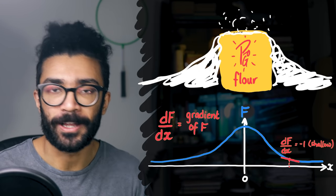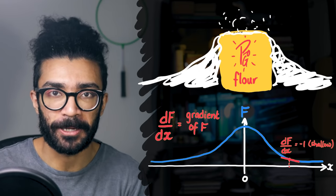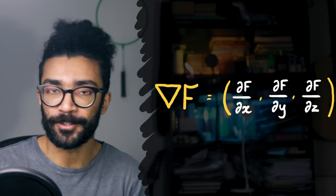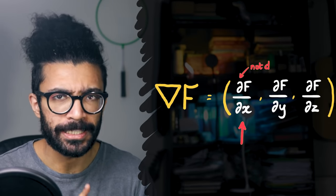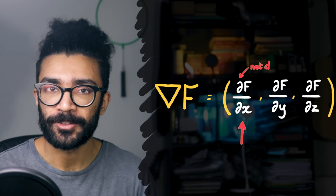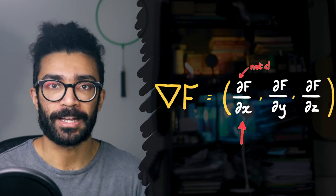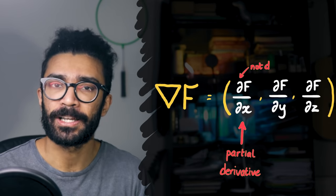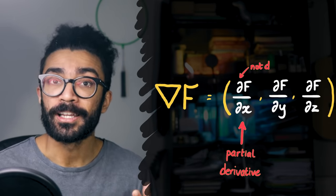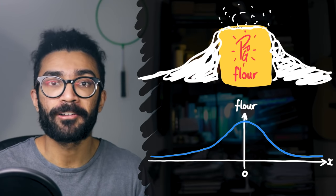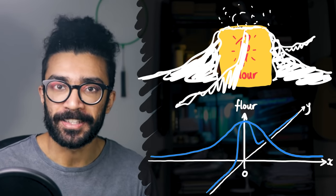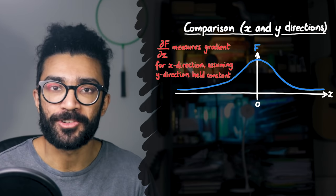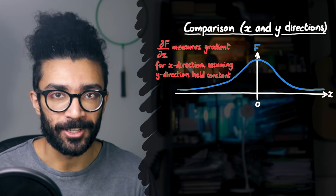Basically, d by dx of our flour distribution f is simply measuring how quickly the flour distribution changes. Now, we could apply this Nabla operator to our function f, and in the first instance we would get df by dx, as we've already seen. Except the Nabla operator has these curly d's — they're not normal d's. These curly d's represent what's known as a partial derivative. If we realize that our flour distribution doesn't just vary over the x-direction, but also varies in other directions, for example the y-direction, then the curly d's in df by dx mean that we're only measuring the change in the x-direction, whilst keeping everything else constant.